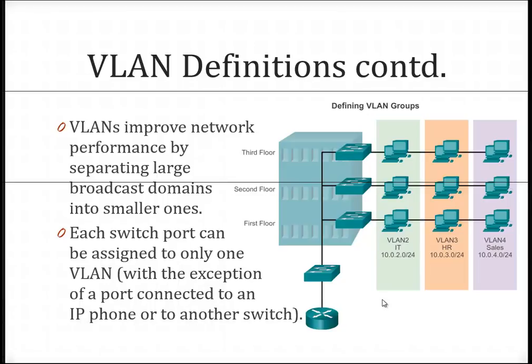Each switch port can only be assigned to one VLAN. There is an exception with IP phones, but that's a little bit beyond the scope of this class. So in this particular example, this PC here is plugged into this port right here. This port could only be part of the IT VLAN — it could not be part of the HR and the sales VLAN.